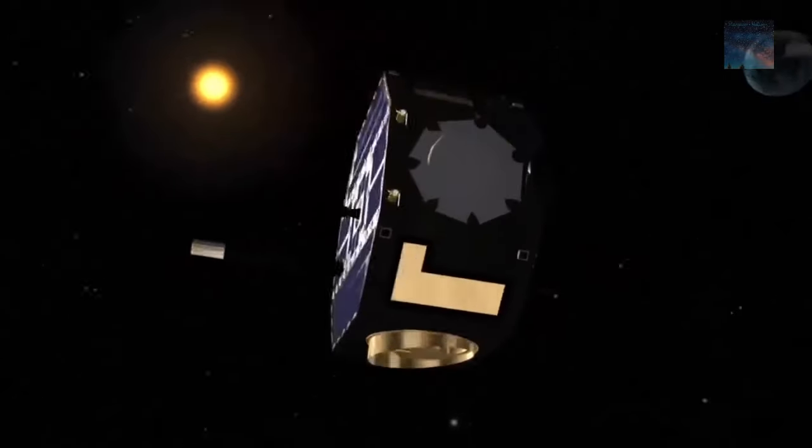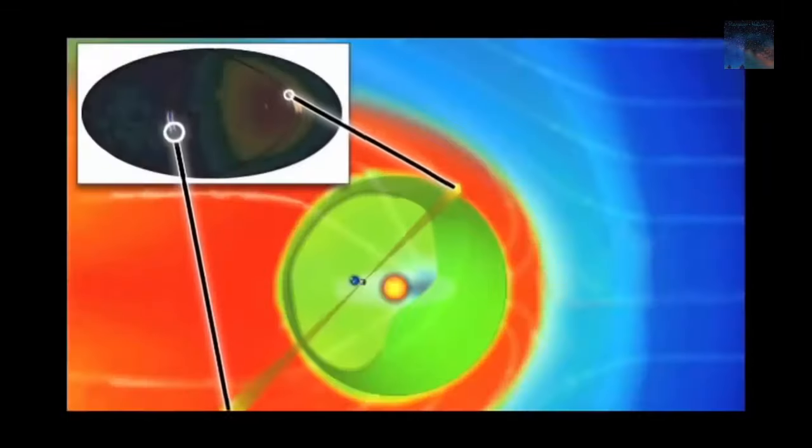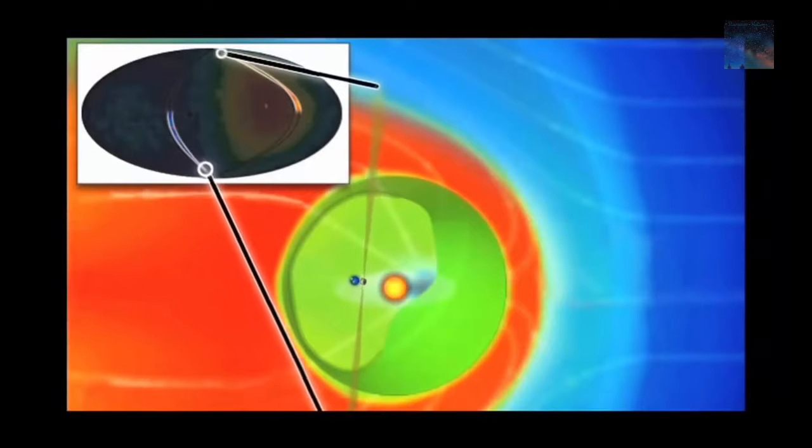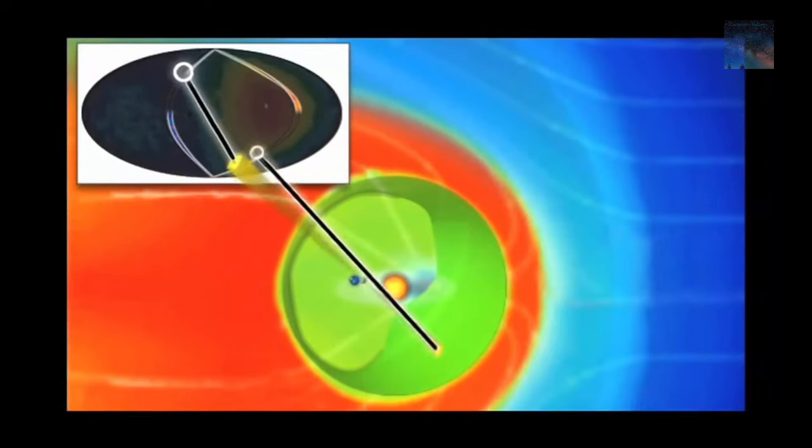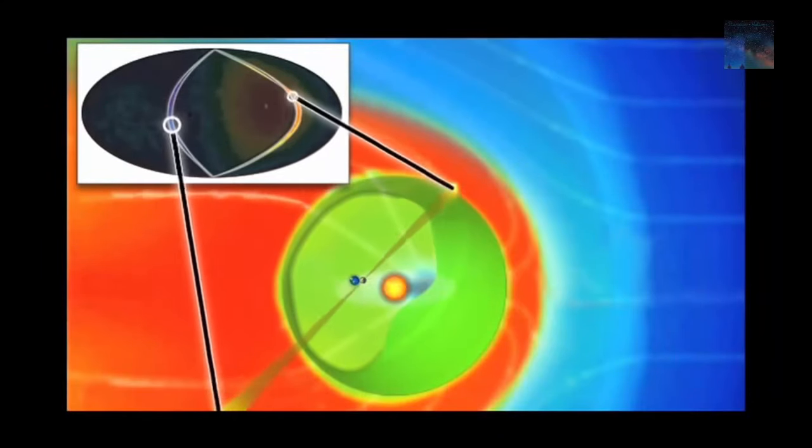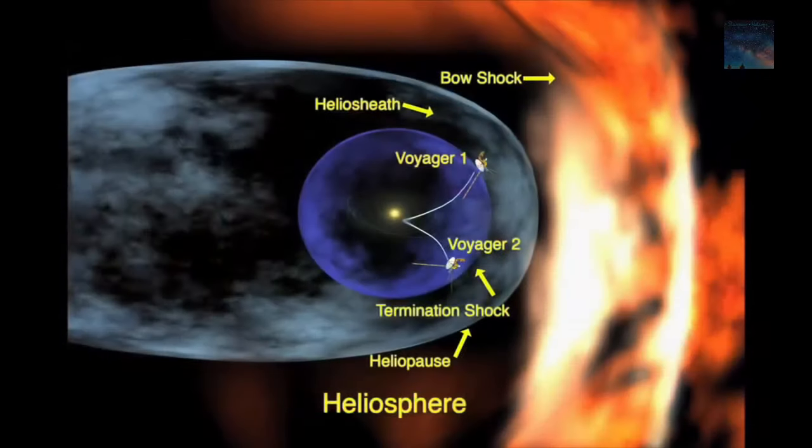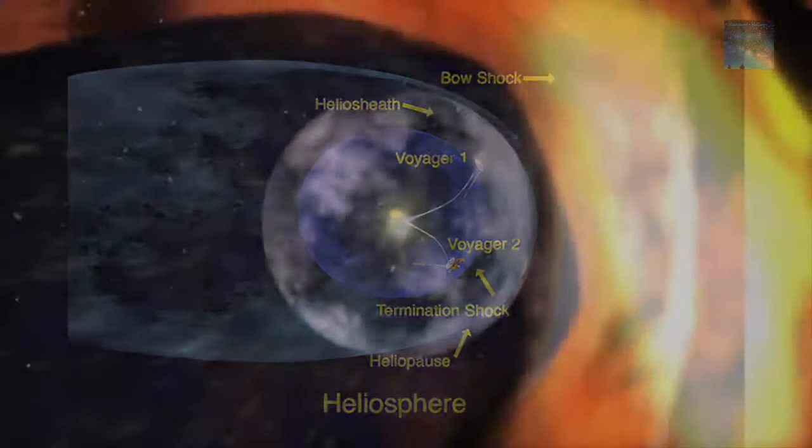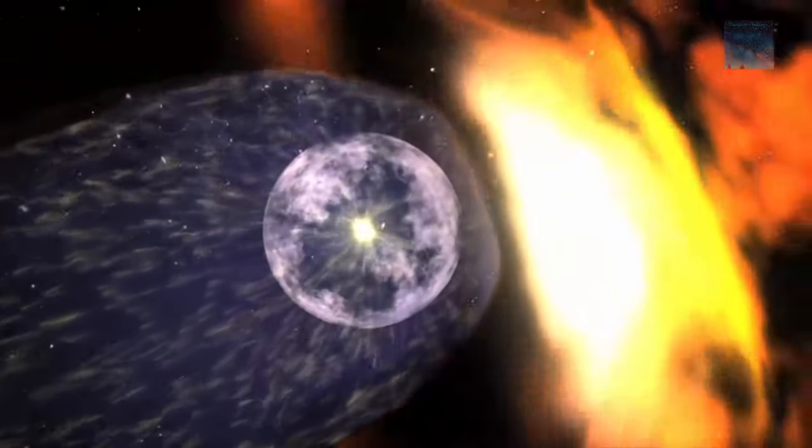As the solar wind flows out from the sun at supersonic speeds, it blows up a bubble known as the heliosphere. The heliosphere encases all the planets in our solar system and much of the space beyond them, separating the domain of our sun from that of interstellar space.